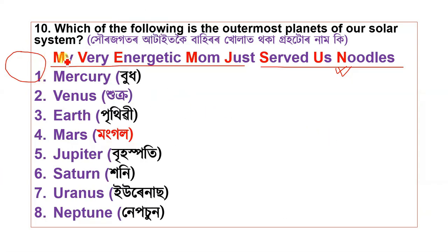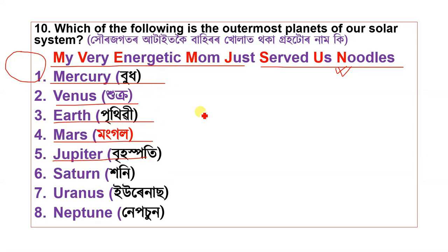To remember the order of planets, use the mnemonic: My Very Energetic Mom Just Served Us Noodles — Mercury, Venus, Earth, Mars, Jupiter, Saturn, Uranus, Neptune. This helps us see how the universe is ordered.